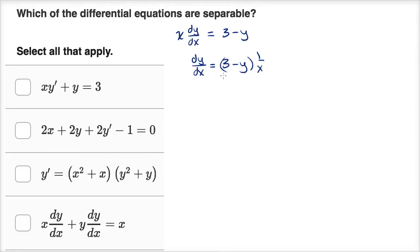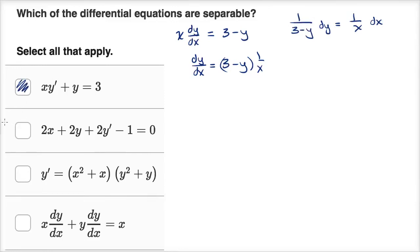I can multiply both sides by dx and divide both sides by three minus y, and I would get one over three minus y dy equals one over x dx. So clearly, this one right over here is separable.